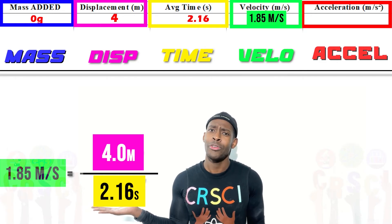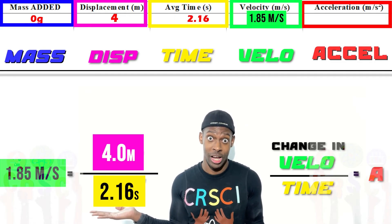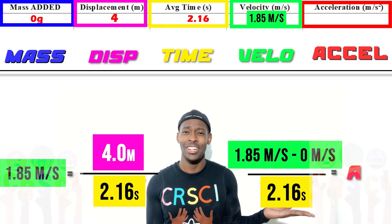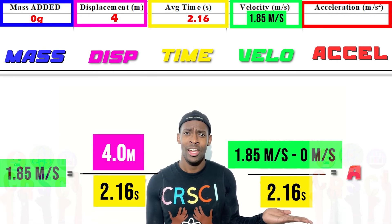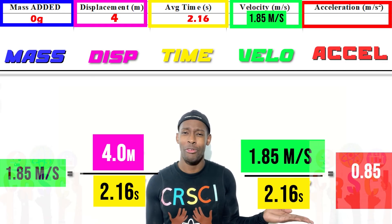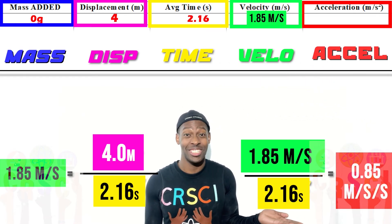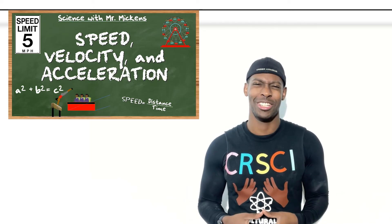Now to figure out how that velocity changed over time, or the rate at which it changed over time, 1.85 divided by 2.16, you will see that the balloon's velocity increased by 0.85 meters per second every second, or its acceleration is 0.85 meters per second squared. Now, if all of that was a little confusing to you or you need a refresher, feel free to check out our other video on speed, velocity, and acceleration.